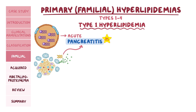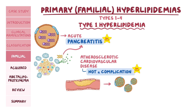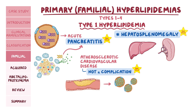Another unique feature of type 1 hyperlipidemia is that atherosclerotic cardiovascular disease is not a complication. That's because the development of an atherosclerotic plaque is usually related to the elevation of other lipoproteins like LDL, and not related to the elevation of chylomicrons. People with this condition can also develop hepatosplenomegaly. An important clue that might appear on your exams is that when fasting serum is chilled, the chylomicrons will form a creamy layer at the top of the test tube.